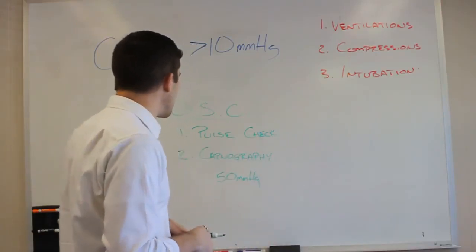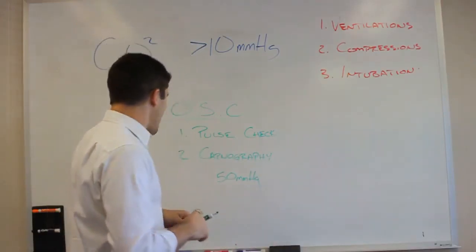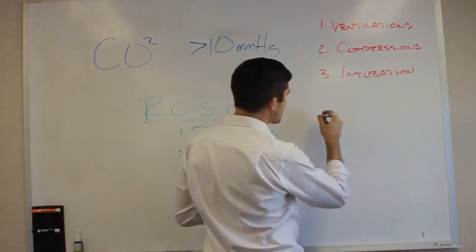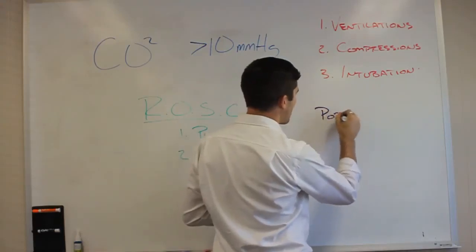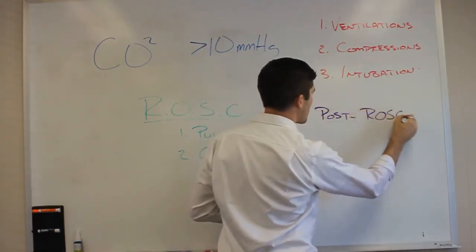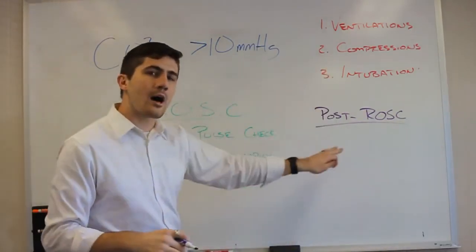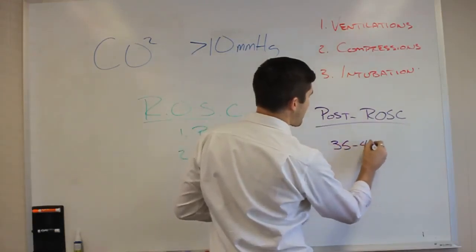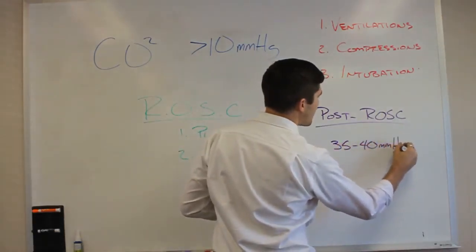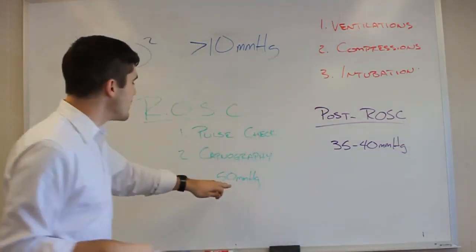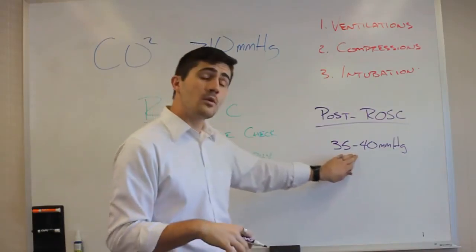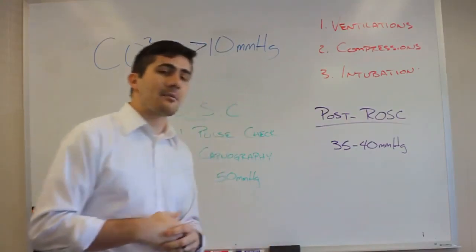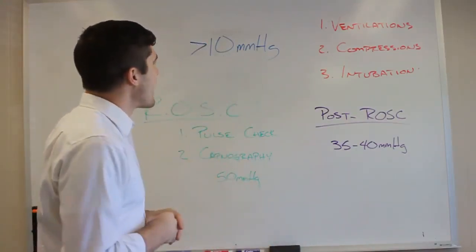So it's a great way of determining ROSC. And what you're going to see in a post-ROSC situation, over here we have post-ROSC, you'll see that number drop down to about 35 to 40 millimeters of mercury, usually 10 to 15 minutes after you initially see this spike. It'll drop down to the range where you and I normally sit. So those are the numbers for waveform capnography. That's what you're looking for, and that's how it's super helpful.